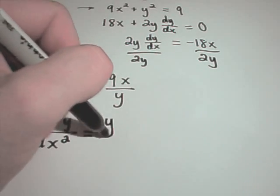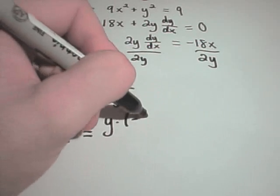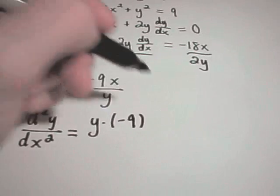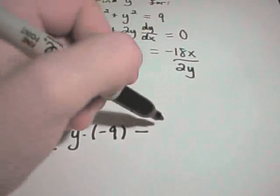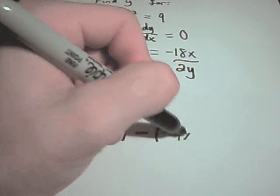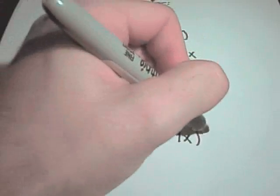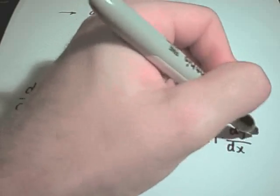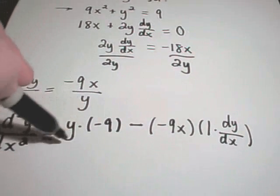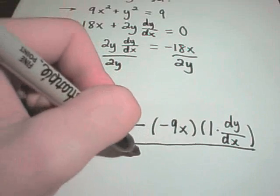So the quotient rule says you take the bottom times the derivative of the top, which will simply be negative 9, minus the top times the derivative of the bottom, which is going to be 1 dy dx. And then it says we put that all over the denominator squared.